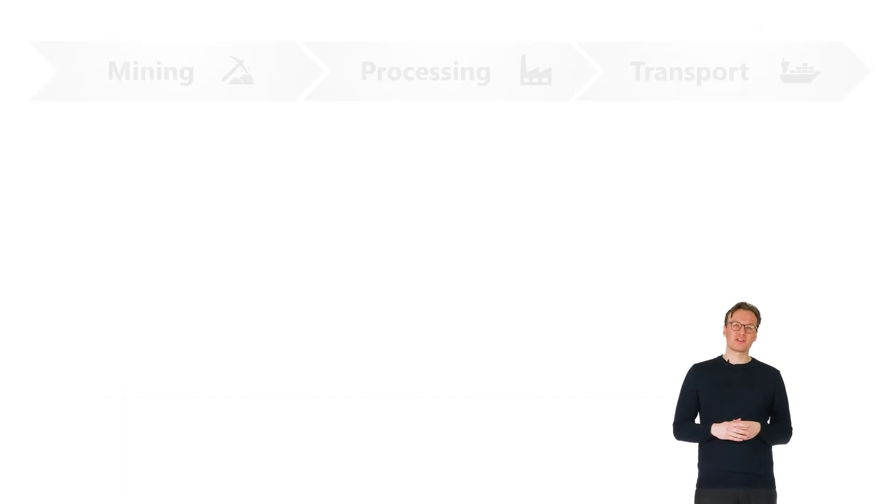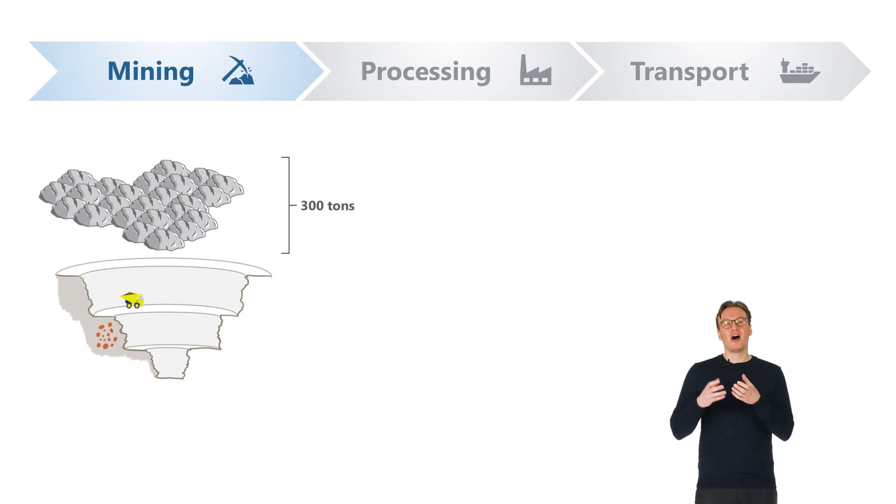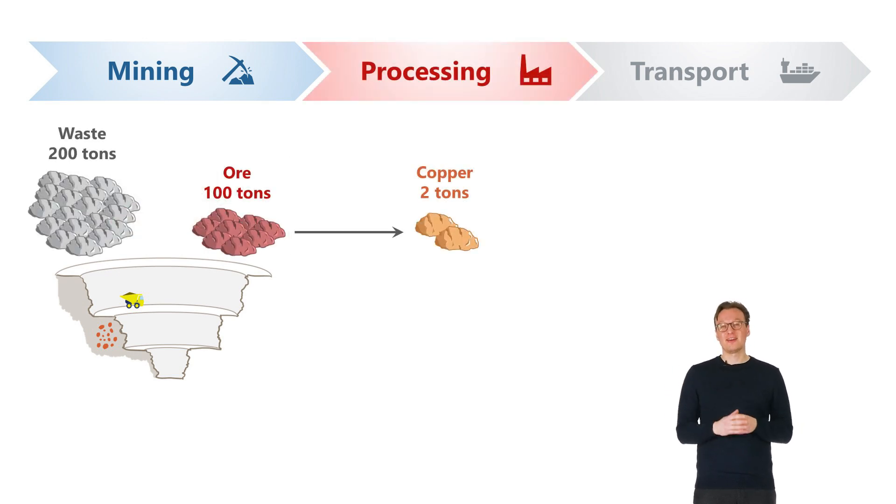Returning to our production chart, out of 300 tons of material, 100 tons represents ore to be processed. We estimate 2 tons of copper available at the end of processing, given an ore grade of 2%.